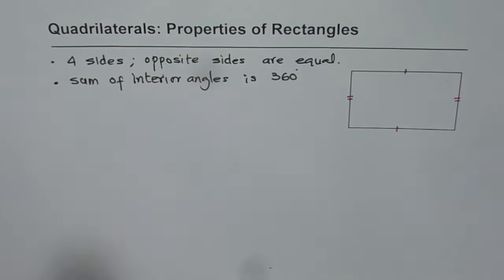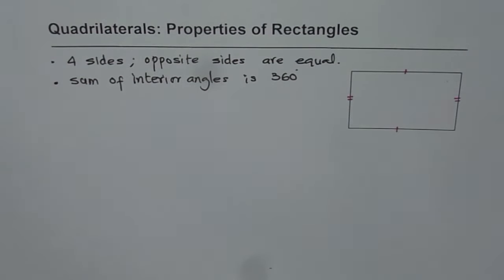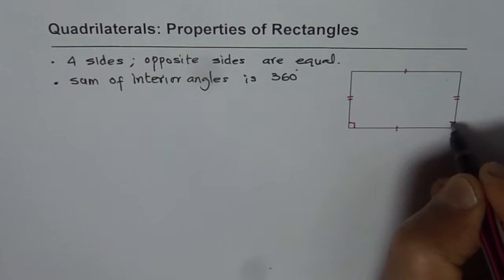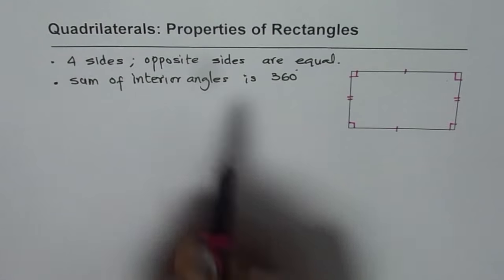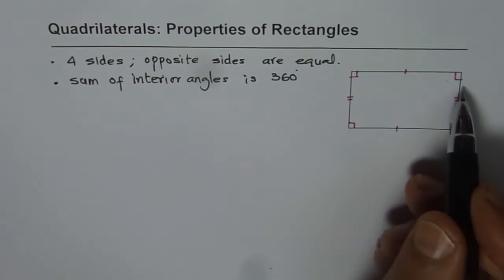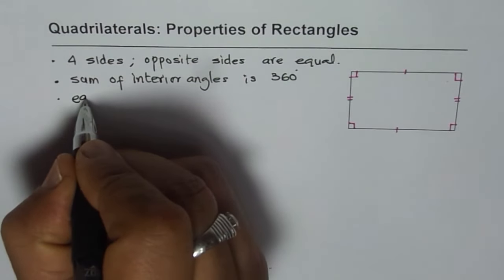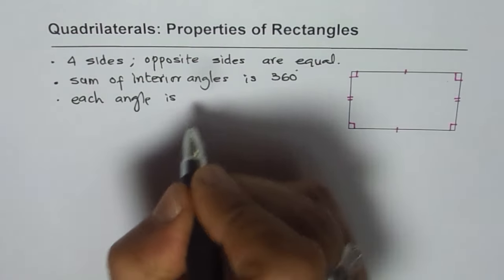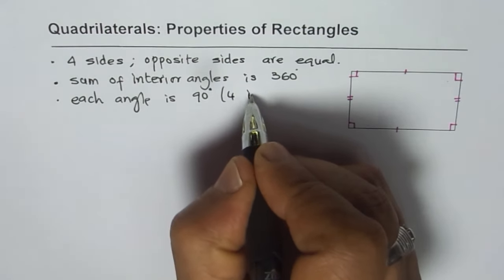Now we say the sum of interior angles is 360 degrees. How much is each angle? Each angle in a rectangle is 90 degrees. The sum of interior angles is 360 degrees, that means four times 90 degrees. So each angle, there are four of them, is 90 degrees.